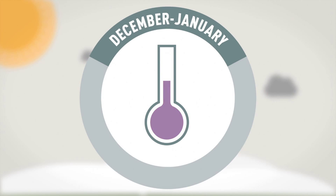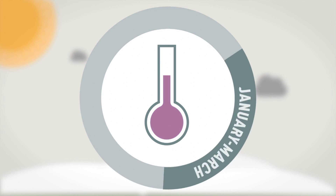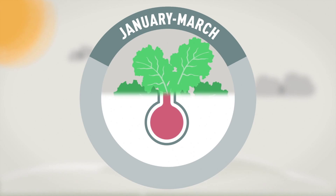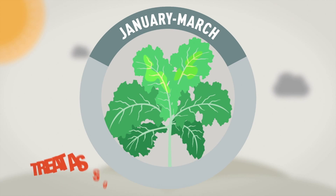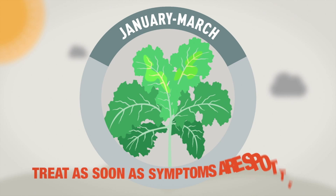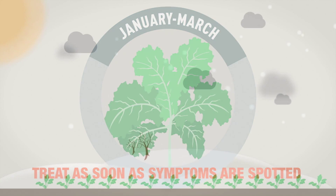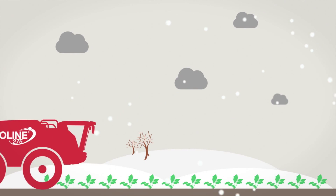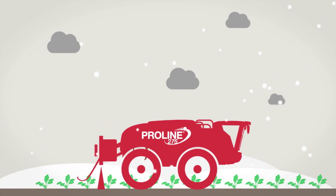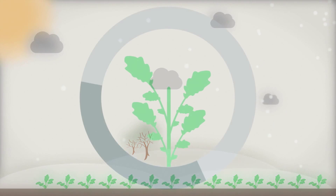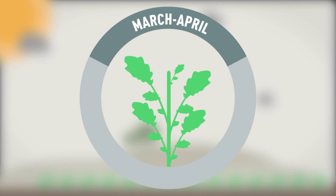Low temperatures through winter will slow disease progression. As temperatures rise, further outbreaks of lightleaf spot can occur and should be treated as soon as symptoms are spotted. A top-up application of proline will help to control the disease and protect new growth at stem extension.